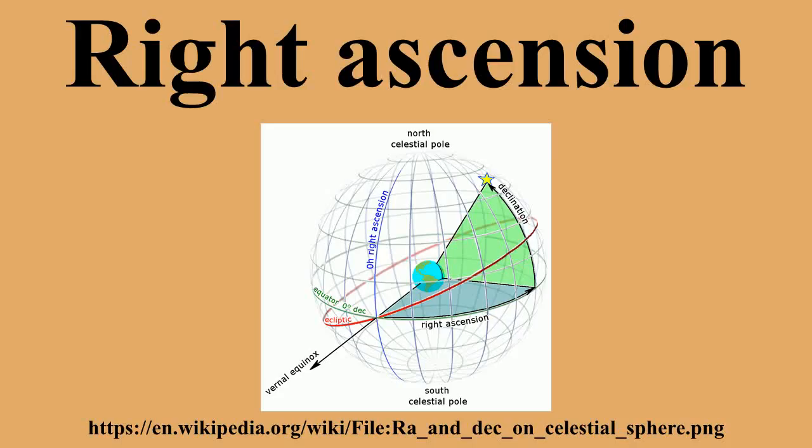Because right ascensions are measured in hours, they can be used to time the positions of objects in the sky. For example, if a star with RA = 01h 30m 00s is on the meridian, then a star with RA = 20h 00m 00s will be on the meridian 18.5 sidereal hours later.